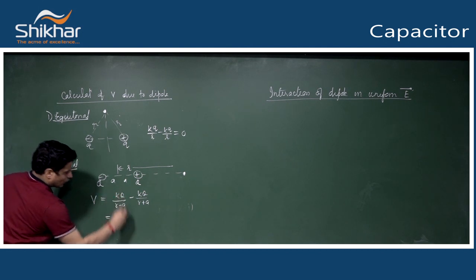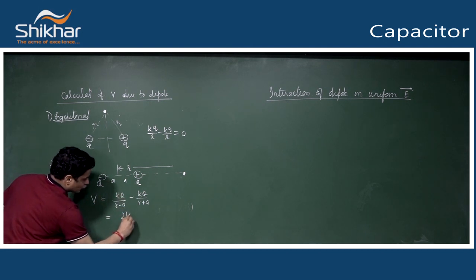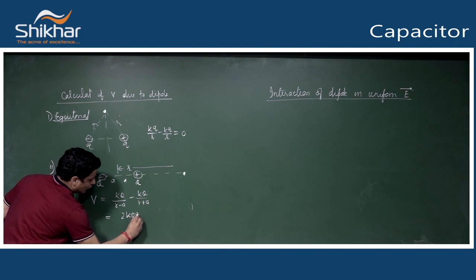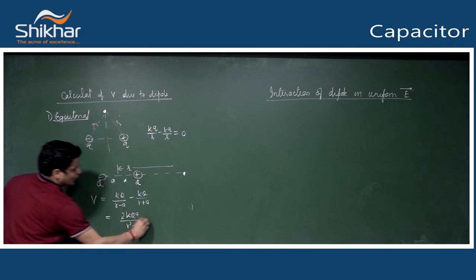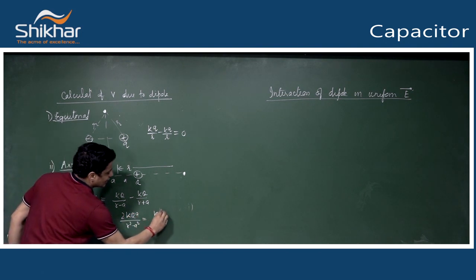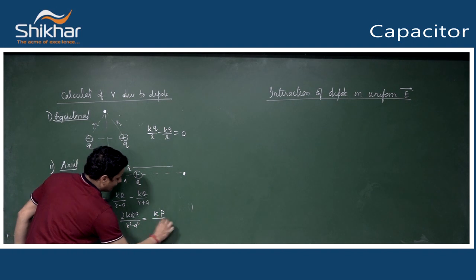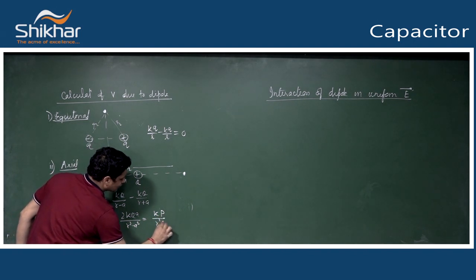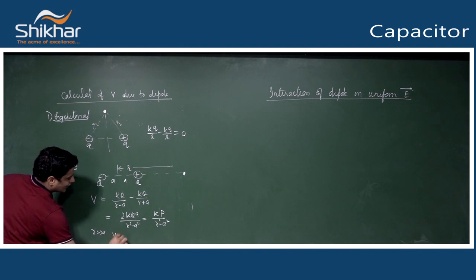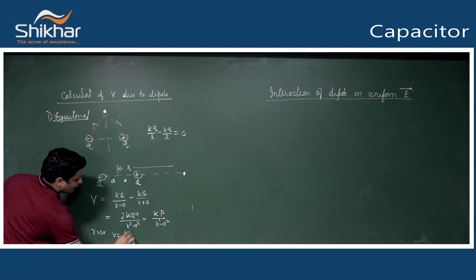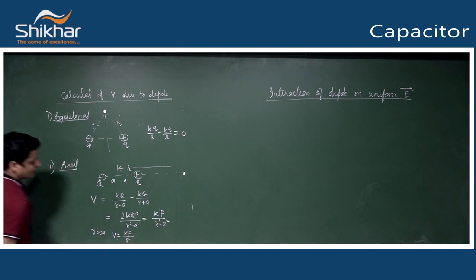Simplifying: 2kqa/(r² - a²). Writing qa as p, we get kp/(r² - a²). If r is very large, the voltage becomes kp/r².